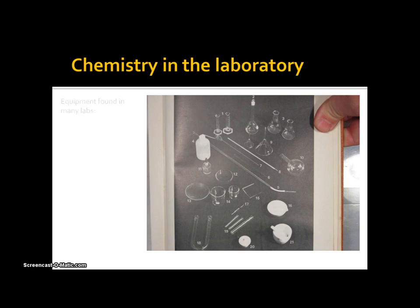These are equipments found in many labs: a graduated cylinder, that's these over here; a glass stoppered flask would be this here; an Erlenmeyer flask, there's two of them here and Erlenmeyer flasks could be of different sizes.